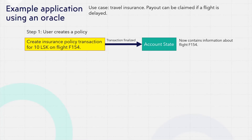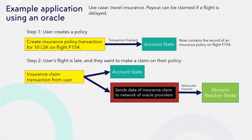Let's go through this example use case step by step. First, the user creates a policy. For example, they purchase an insurance policy paying 100 Lisk for 10 Lisk on flight F-154. The transaction is finalized and the user's new account state is updated with details about their insurance policy. The user's flight is late and they want to make a claim on their policy. The user sends a transaction representing their insurance claim. This is noted in their account state and the Moracle plugin sends information about the flight that the app needs data on to a Moracle resolver node.